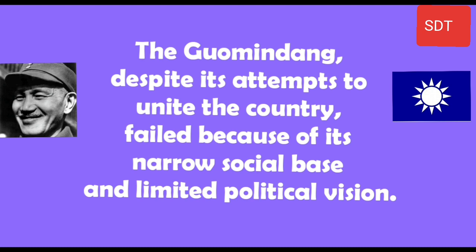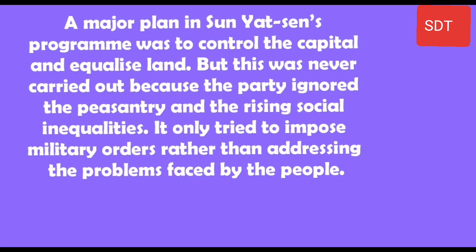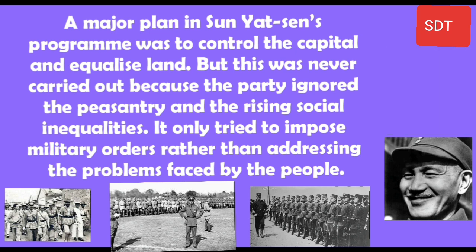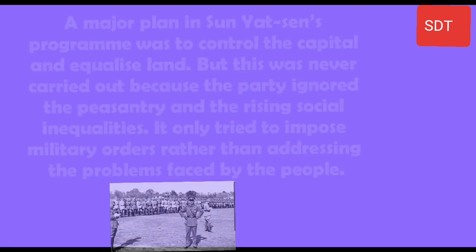The Guomindang, despite its attempts to unite the country, failed because of its narrow social base and limited political vision. A major plan in Sun Yat-sen's program was to control capital and equalize land. But this was never carried out because the party ignored the peasantry and rising social inequalities. It only tried to impose military orders rather than addressing the problems faced by the people.